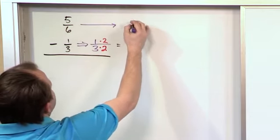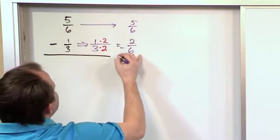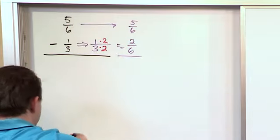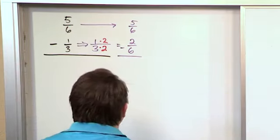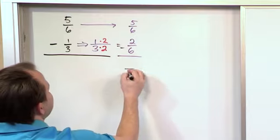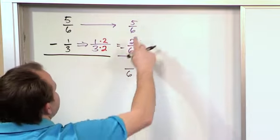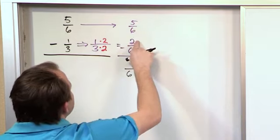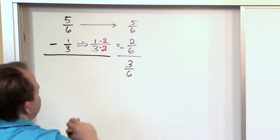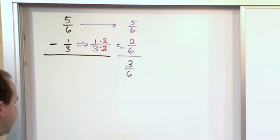This one we don't have to change at all. We still have 5 sixths. And now we can subtract them because we have a common denominator. And so what we do is we just keep the 6 on the bottom because that's what we do when we have a common denominator. And the top we subtract 5 minus 2 which gives us 3. So that's the answer, 3 sixths.